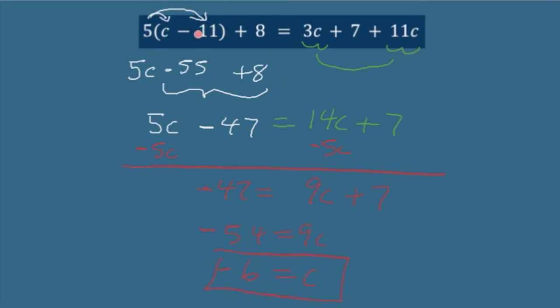And again, you could use a calculator. Type this in here. Five, parenthesis, negative six minus 11, parenthesis, plus eight equals negative 77. On the left side, double check the right side, three times negative six, plus seven, plus 11, times negative six, enter negative 77 on the right side. They match, I know I'm correct.